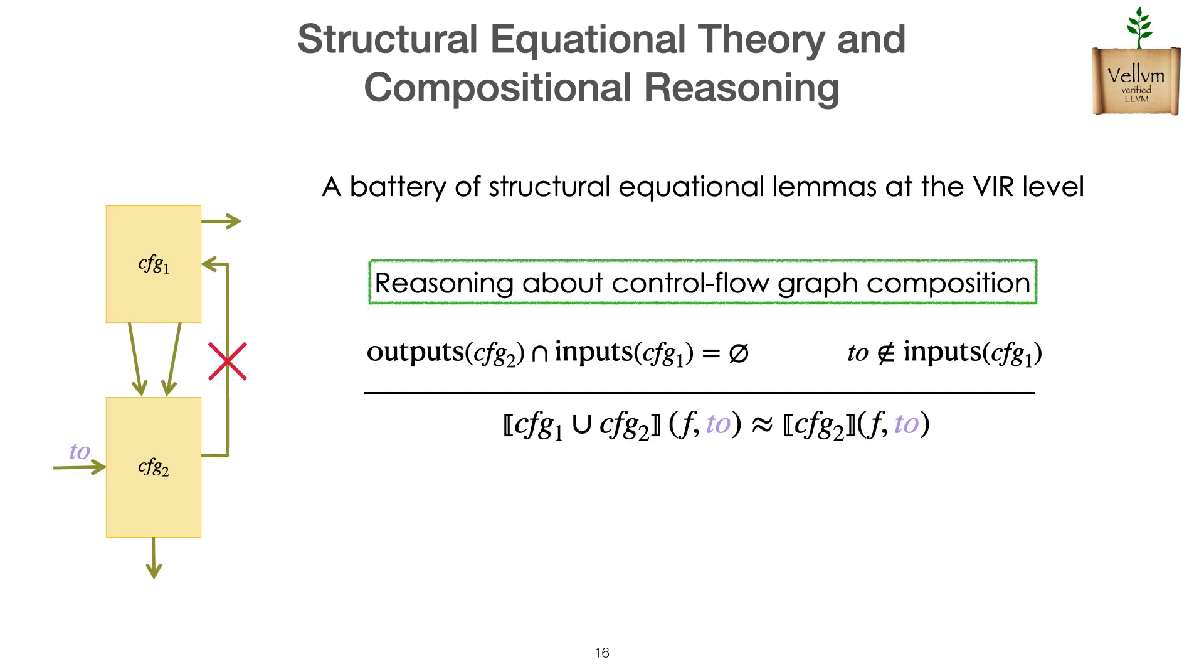In particular, we can reason about open control flow graphs. For instance, here illustrating on a simple example, the semantics of a control flow graph can be expressed, can be reduced to the semantics of one of its subcomponents if we check, whether syntactically or through a more semantic proof, that there is no way to re-enter the other part of the graph. In the paper, we illustrate the use of this equational theory to provide a quite satisfying proof of a simple block fission optimization.